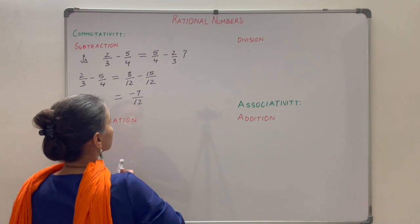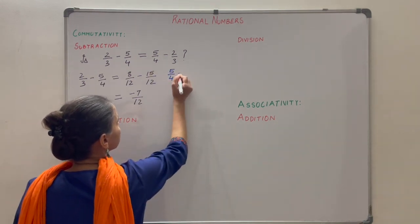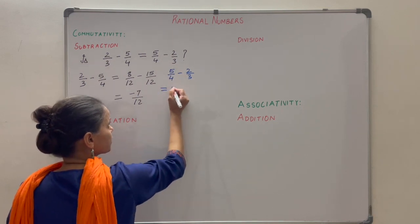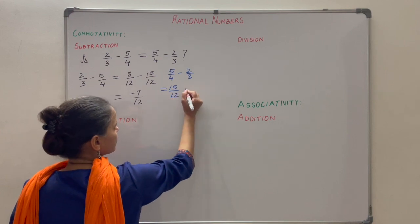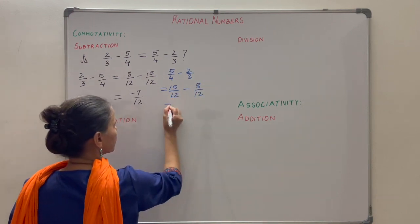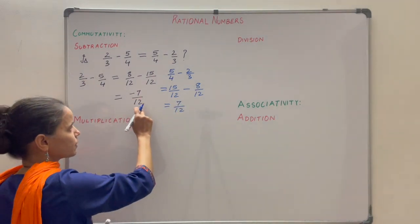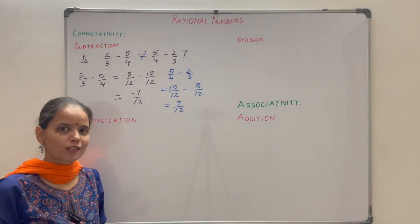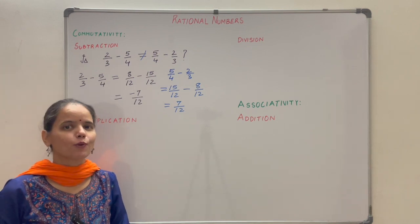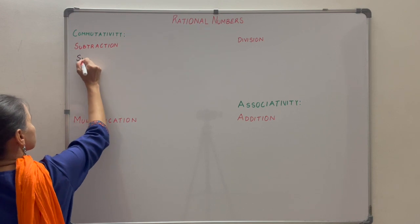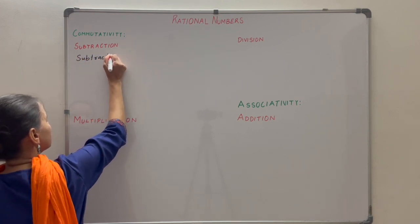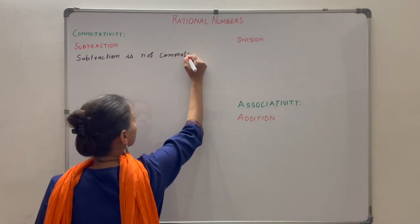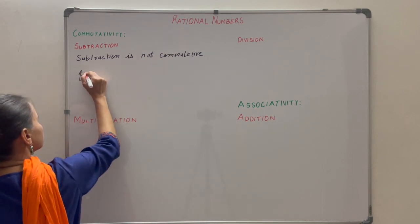Now solving the right side: 5 by 4 minus 2 by 3. Again the LCM is 12, giving 15 by 12 minus 8 by 12, which equals 7 by 12. Clearly minus 7 by 12 is not equal to 7 by 12, so this side is not equal to the other side. Therefore, subtraction is not commutative for rational numbers.